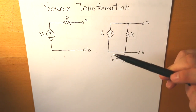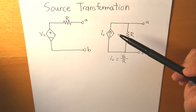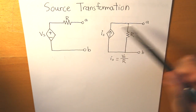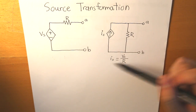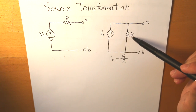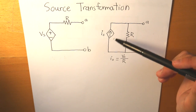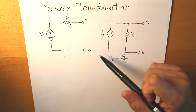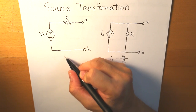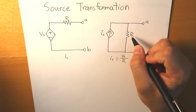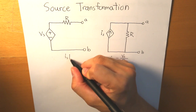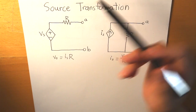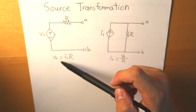Source transformation also works in the other direction. So if we were already given a circuit with the current source in parallel with the resistor, but we want to transform it to find what our voltage source will be, then what we do is we take the current source multiplied by R, and that will give us what our VS value is going to be.